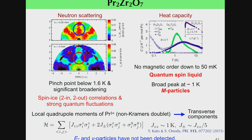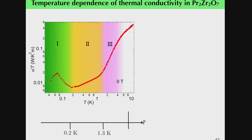However, from heat-capacity measurements, E and μ particles have not been detected because of the significant nuclear heat capacity at low temperature. Therefore, thermal conductivity was measured, since it is a very sensitive probe for low-energy itinerant excitations. Here the thermal conductivity divided by temperature is shown as a function of temperature in a log-log scale.